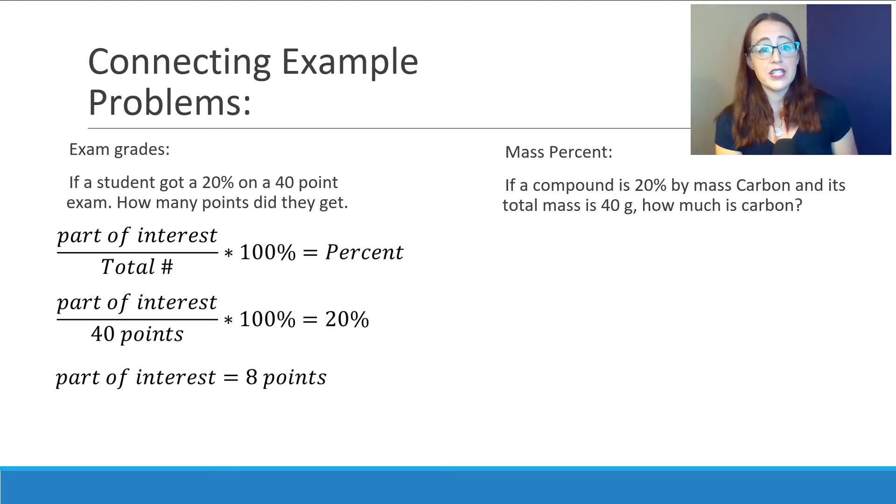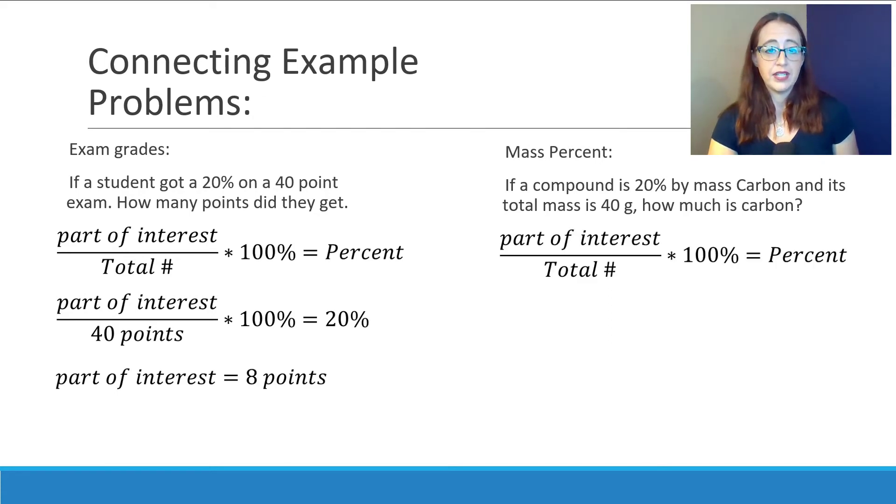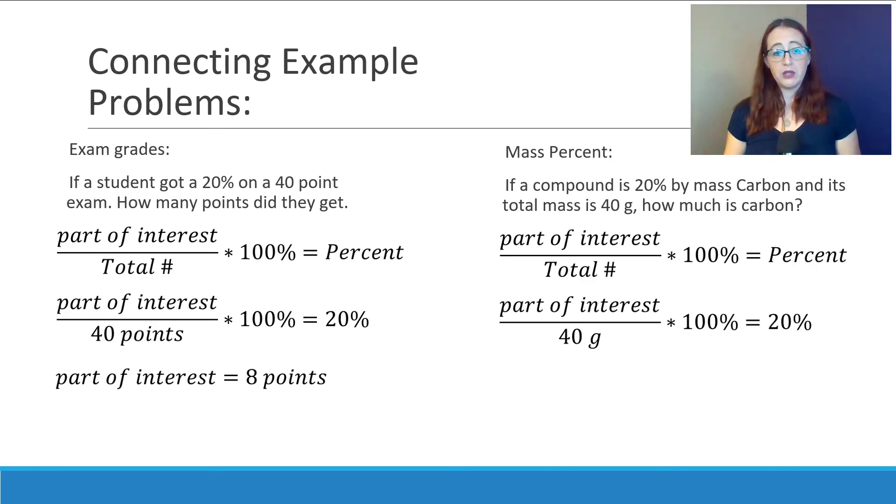So, here I said that we have a compound that's 20 percent by mass of carbon, and that the total mass is 40 grams. How much is the carbon? So, we're going to work through this the same way. We have our part of interest, which we don't know, but that's what we're trying to figure out, over our total of 40 grams times 100 percent. So, if we want to know 20 percent of 40, we take 0.2 or 20 percent divided by 100 percent times by 40. 0.2 times 40 is 8, and so we would have 8 grams of carbon.